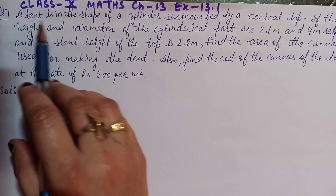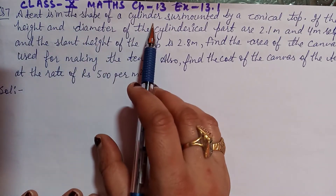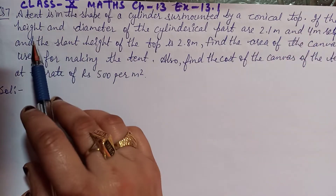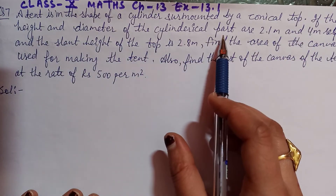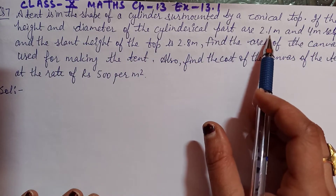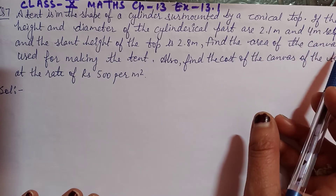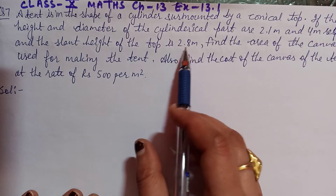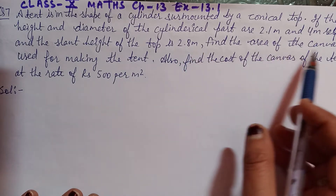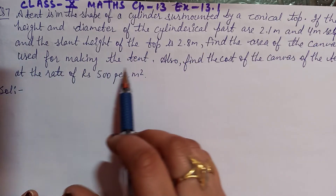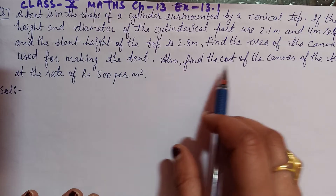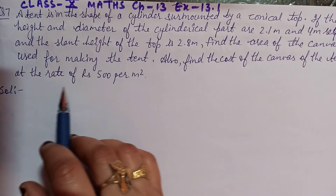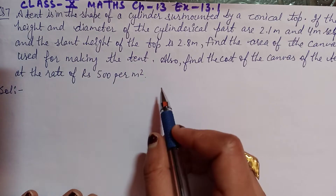Question number 7: A tent is in the shape of a cylinder surmounted by a conical top. If the height and diameter of the cylindrical part are 2.1 meter and 4 meter respectively, and the slant height of the top is 2.8 meter, find the area of the canvas used for making the tent. Also find the cost of the canvas at the rate of Rs. 500 per meter square.